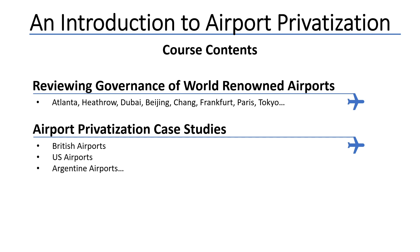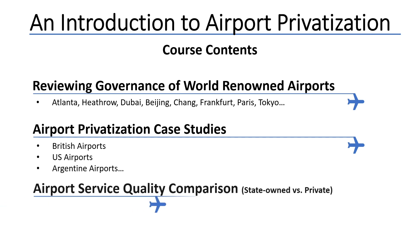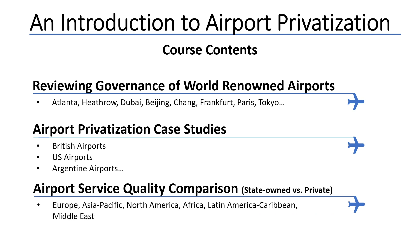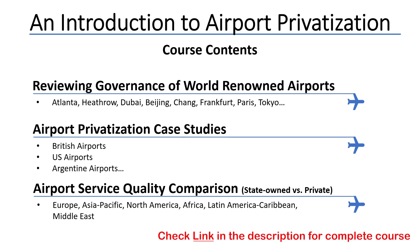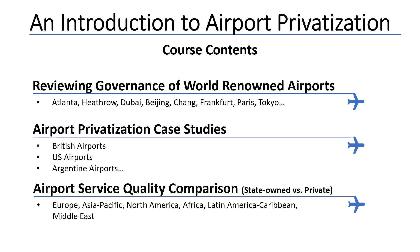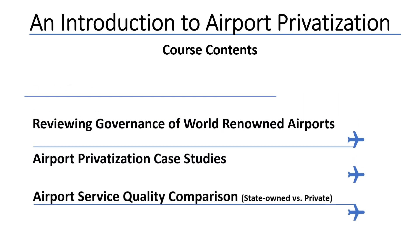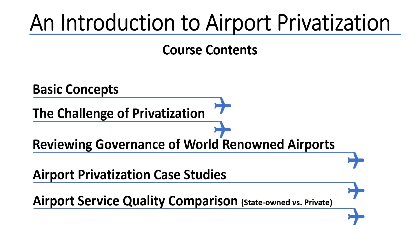In the last section, we will compare state-owned airports around the world with privately-owned airports in terms of the quality of airport services, through a reliable measure accepted in the airport industry. This section is going to develop a sound understanding of how these two forms of governance are delivering in the area of service quality, and if there is any inherent link or connection between state or private ownership and airport service quality. We will finally conclude our course with a reconciliation of the things that we have learned.